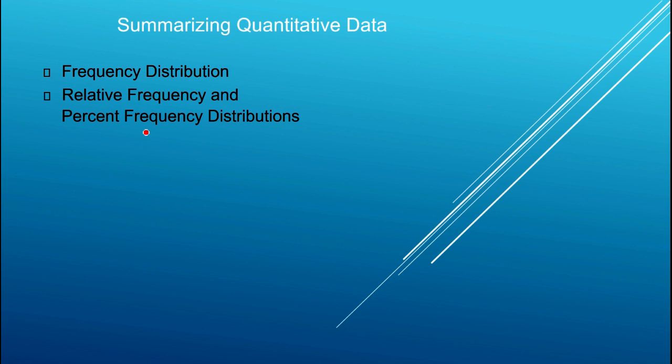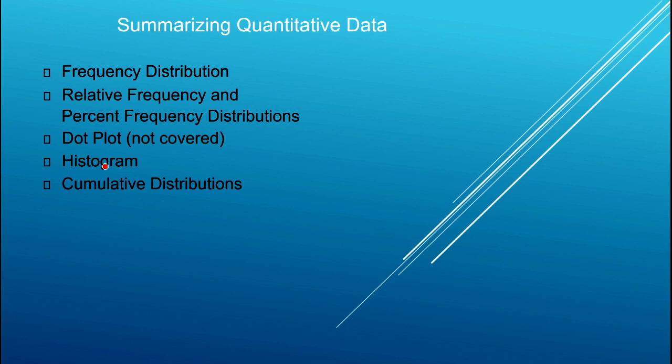Your textbook covers dot plots, but I will not cover those in this video. I will however cover histograms. A histogram is basically like a bar chart but it applies to quantitative data rather than categorical data. I will talk about cumulative distributions as well, which can be calculated for both quantitative and categorical data. Your textbook also covers stem and leaf displays, which you can read about on your own.